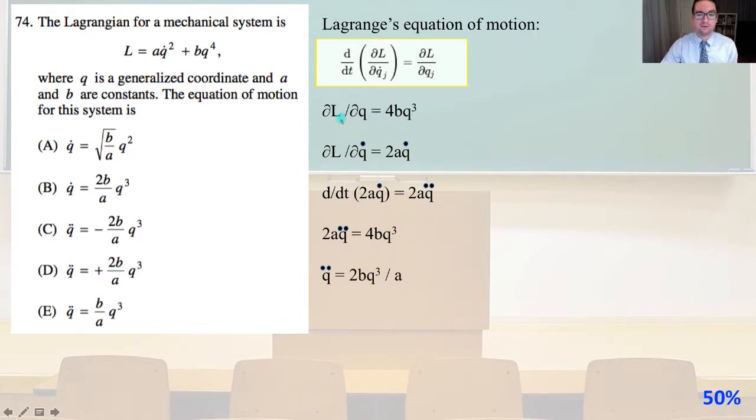The partial of L divided by the partial of Q equals 4B cubed. And the partial of L divided by the partial of Q dot equals 2AQ dot. So DDT of 2AQ dot equals 2AQ double dot. So 2AQ double dot equals 4B times Q cubed. And so Q double dot equals 2BQ cubed divided by A.